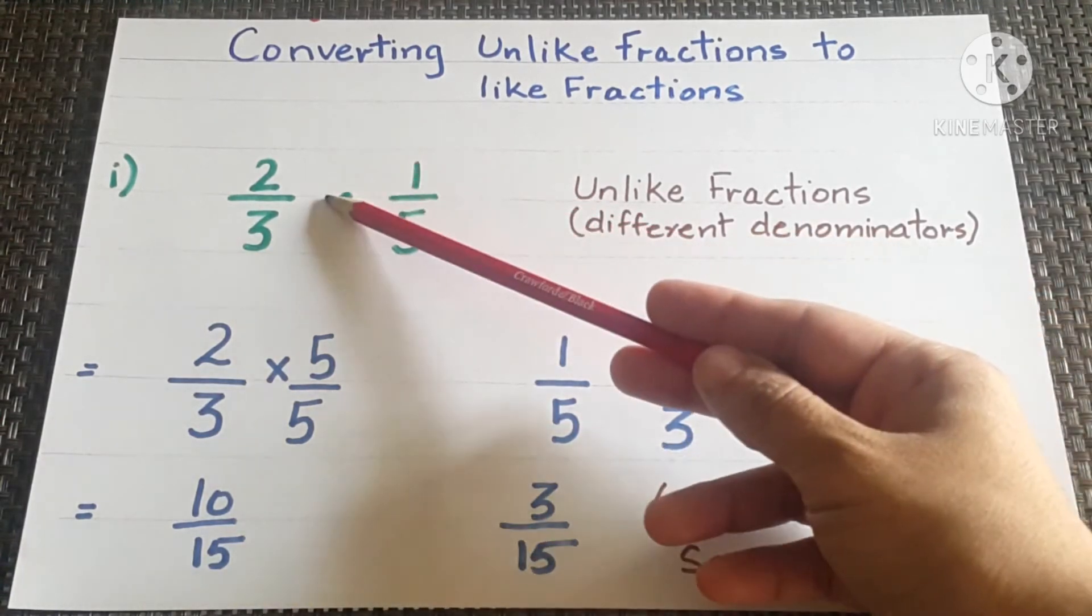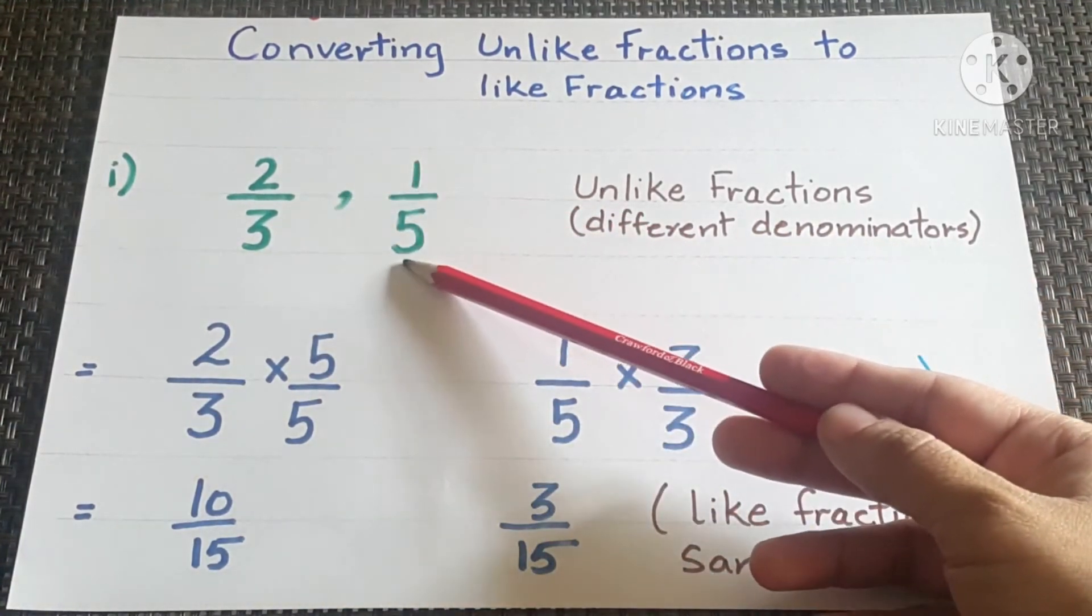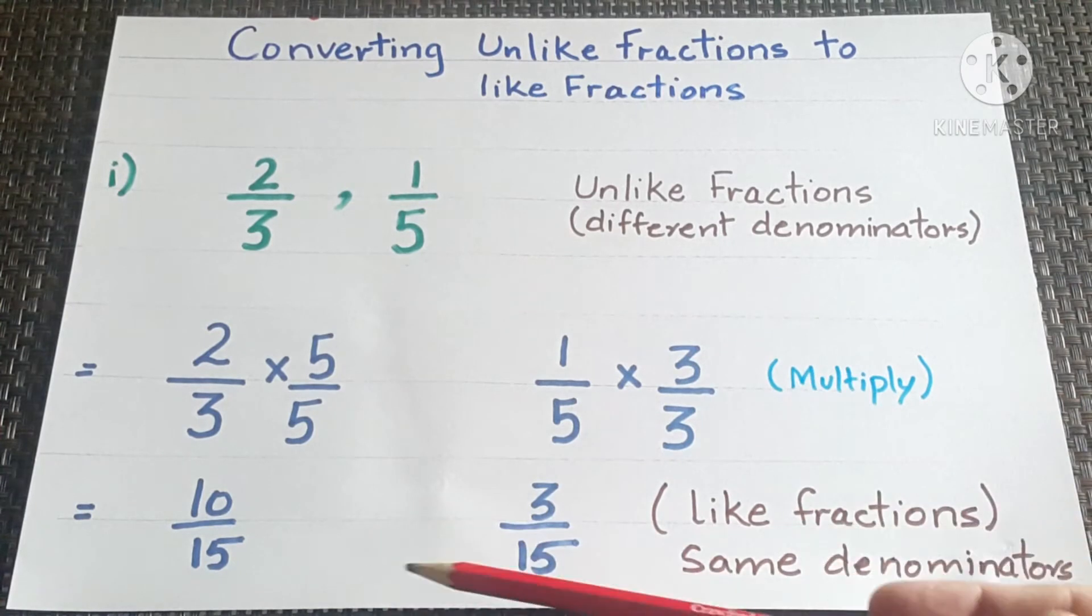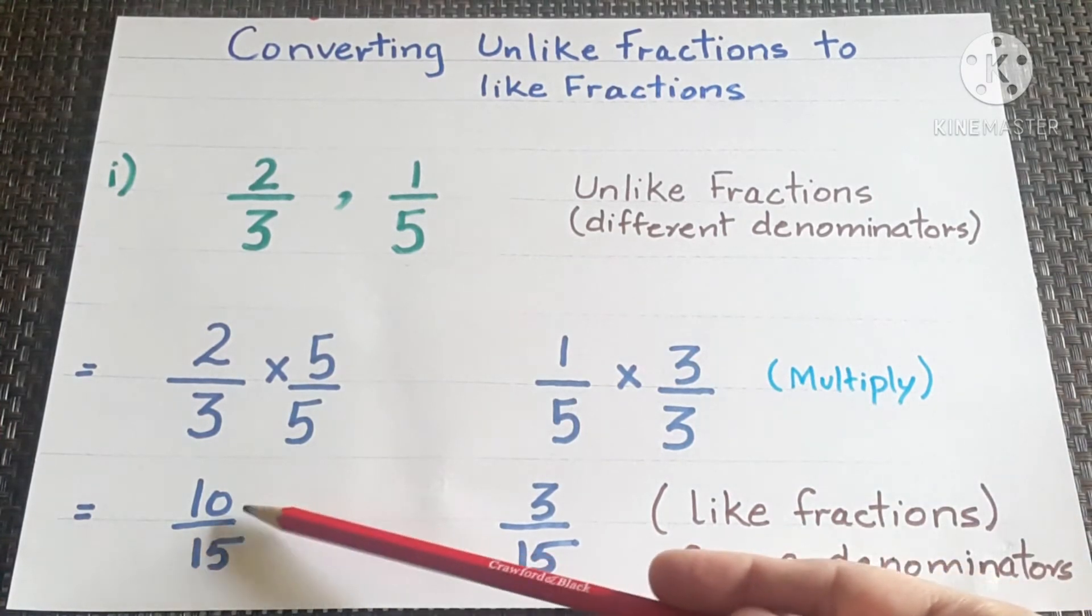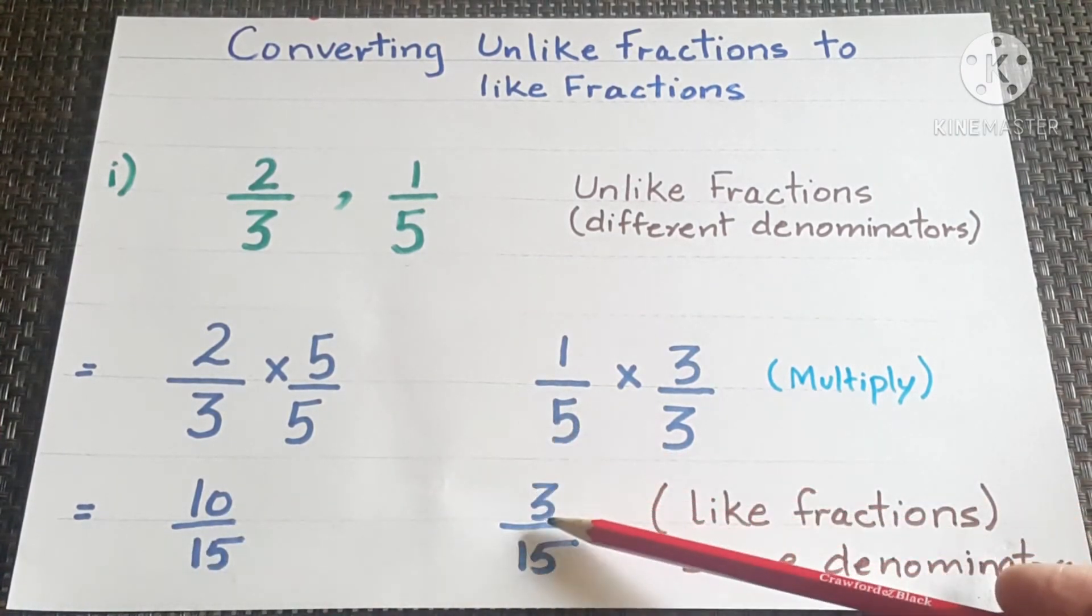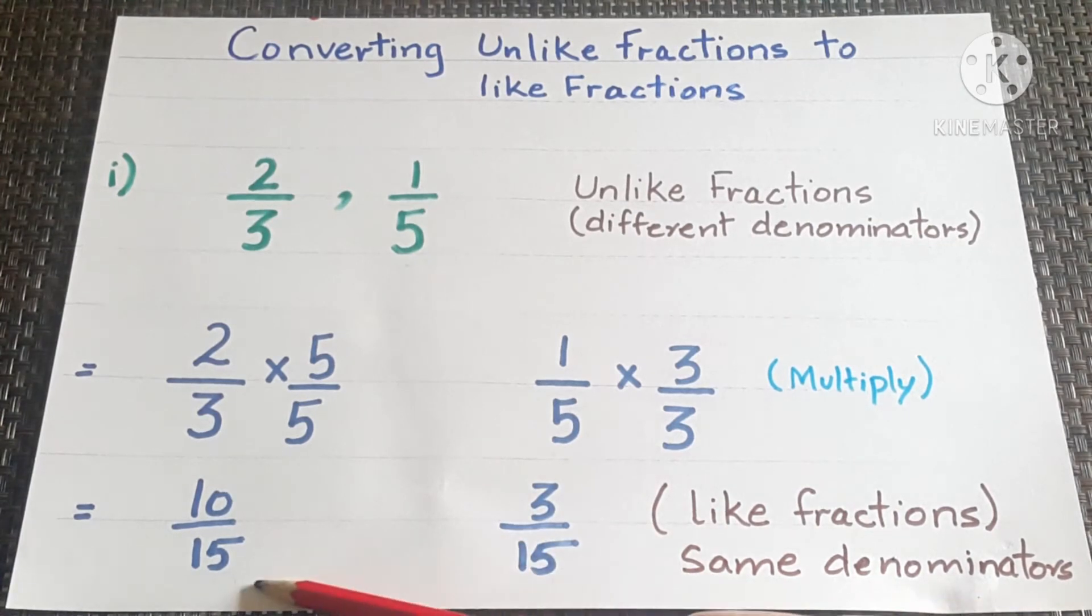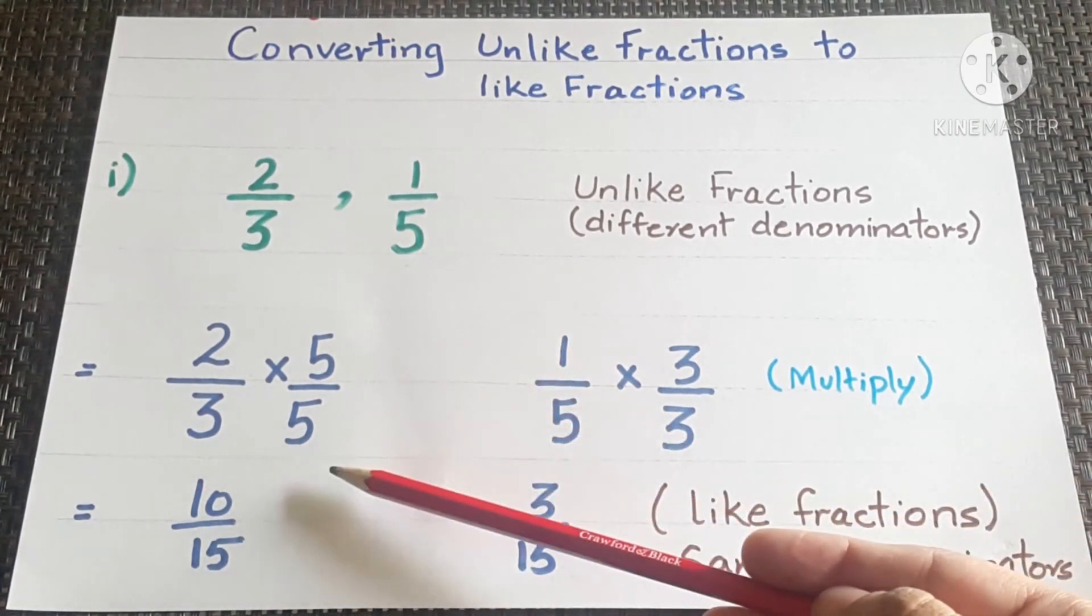Now you can see that 2 by 3 and 1 by 5, the unlike fractions, are converted into like fractions 10 by 15 and 3 by 15 having the same denominator by the process of multiplying.